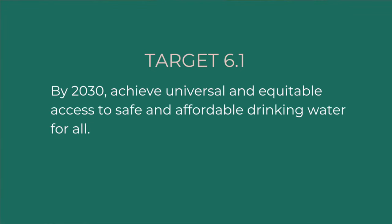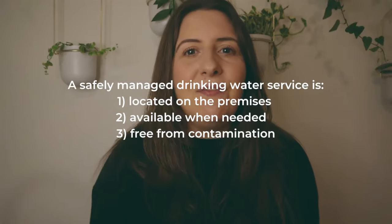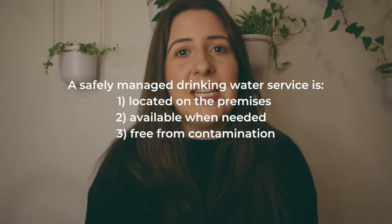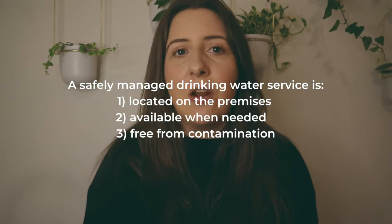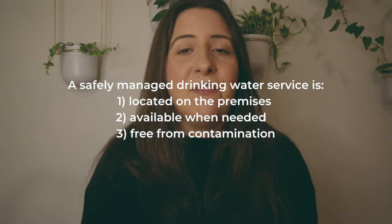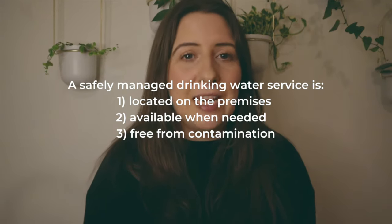This is why SDG 6 is dedicated to ensuring the availability and sustainable management of water and sanitation for all. Target 6.1: By 2030, achieve universal and equitable access to safe and affordable drinking water for all. To understand this target, let's zoom in on two very important words within it — safe and affordable. A safely managed drinking water service is defined as one that's located on the premises, is available when needed, and is free from contamination.